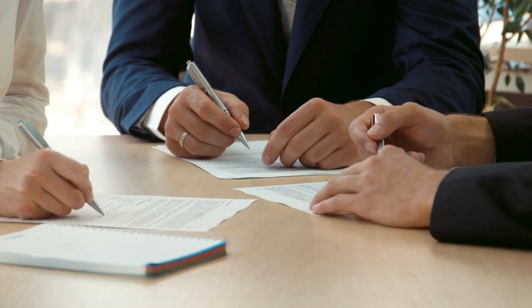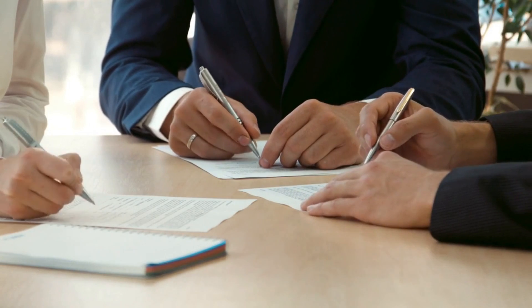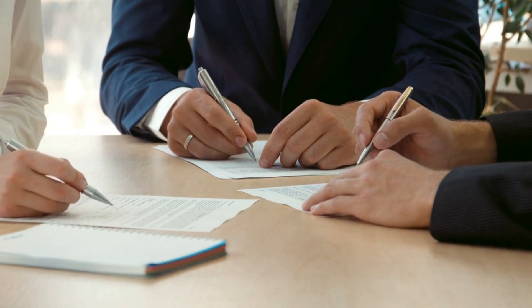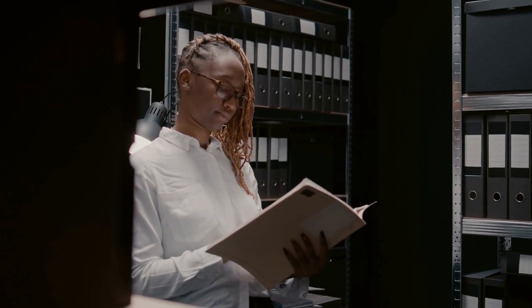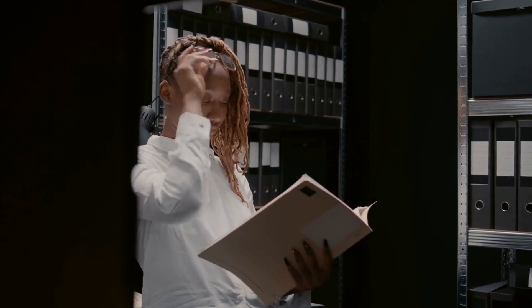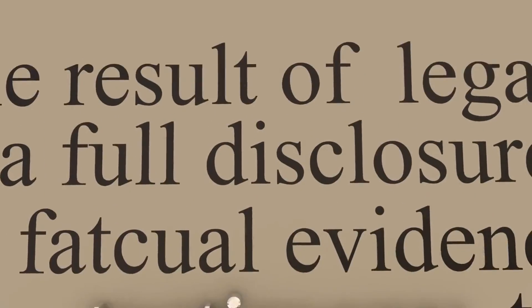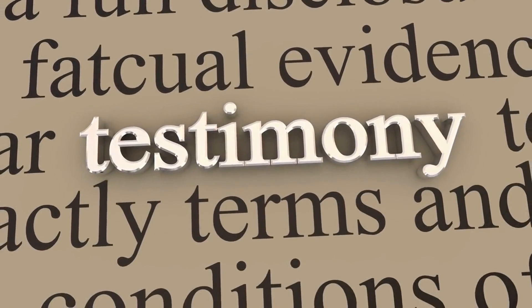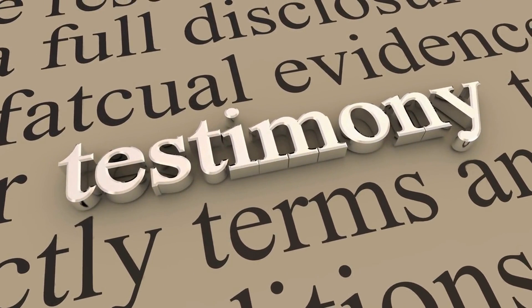In conclusion, the accuracy of eyewitness testimony is influenced by many factors, including the memory process, memory reconstruction, and stress. As we have seen, even small changes in the wording of a question or the level of stress can affect the accuracy of a witness's testimony. It is important to be aware of these factors when evaluating eyewitness testimony in criminal cases. Thank you for watching today's video, and remember to always question your own memories and be aware of the potential biases and influences on your testimony.